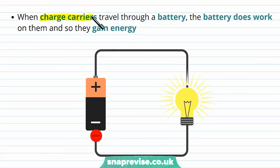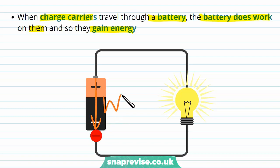When the charge carriers travel through a battery, the battery does work on them so they gain energy. So when this charge carrier passes through the battery, the battery is going to do some work on it — which is how it gains energy. Similarly, when the charge carrier passes through the lamp, it needs to do work on the lamp in order to pass through it, which is how the lamp gains energy. So the way these components are gaining and losing energy is by doing work on something else.